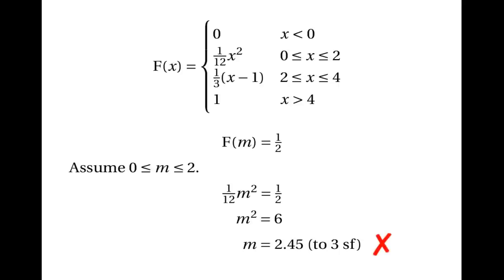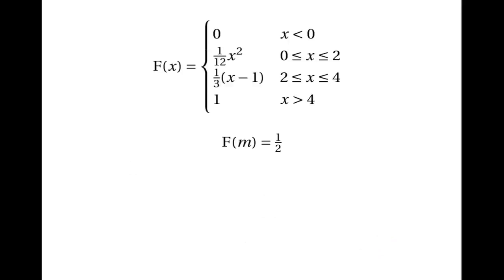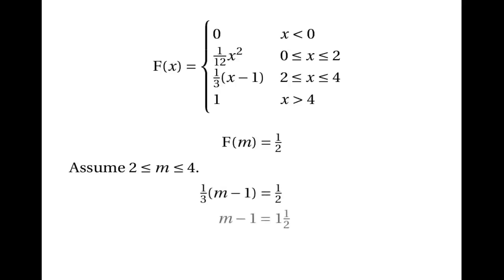Our assumption must have been wrong, so m must actually be between two and four. In that case we solve one third m minus one equals a half. This gives m minus one equals one and a half, which means m equals two and a half. This time the answer is valid because 2.5 is indeed between two and four. So the median equals two and a half.